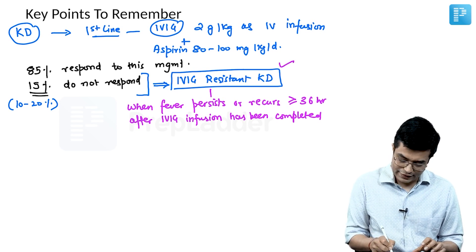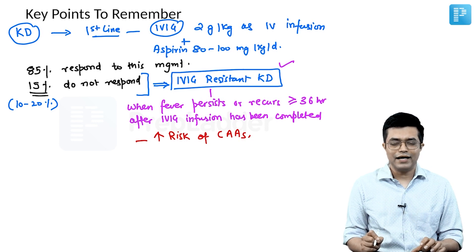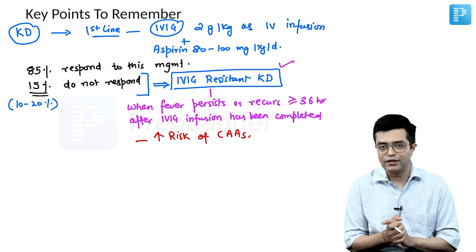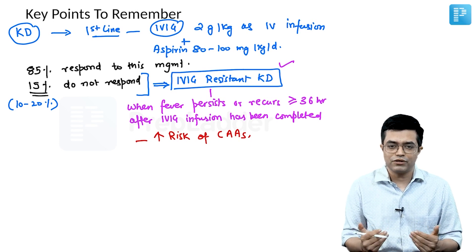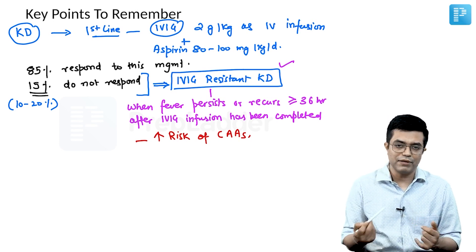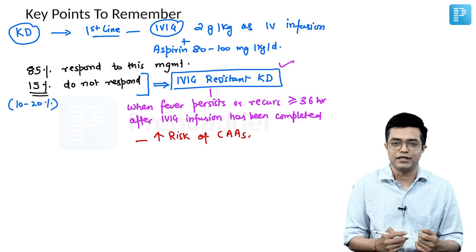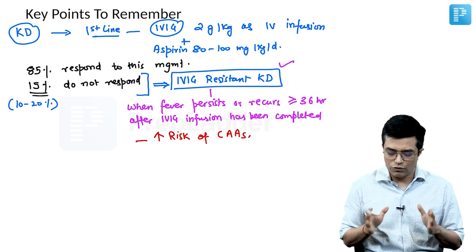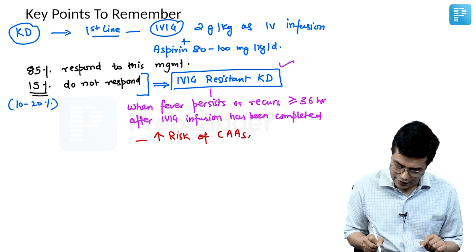In IVIG-resistant KD patients, there is a high risk of developing coronary artery aneurysms. Appropriate management has not been fully defined for these patients, but the management mentioned in the IAP consensus statement and in Nelson are virtually the same. Let us discuss what you need to remember for the management of IVIG-resistant KD.